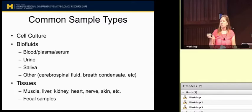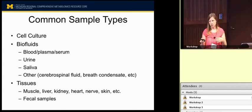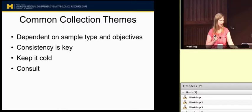Some common sample types that we see and will talk about in more detail are cell culture, various biofluids such as plasma, serum, urine, and saliva, and then there are others. If you work with something like CSF, lavage fluid, or breath condensate, it's really important to speak with us individually so we can tailor what you might need to do. And then tissues, obviously.